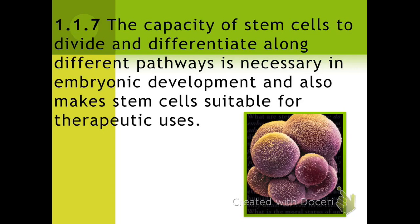Now that we've discussed differentiation and what it is, we're going to see why it's important and what some of the uses are. Looking at understanding 1.1.7: the capacity of stem cells to divide and differentiate along different pathways is necessary in embryonic development and also makes stem cells suitable for therapeutic uses. When an egg is fertilized, the two nuclei from mom and dad fuse to create one single cell with an entire genome. That cell begins to divide, and early on in development those cells do not differentiate — they retain the capacity to specialize until the embryo has grown older. Embryonic cells are very flexible and can be used for therapeutic uses, which we are currently researching, though there are some ethical issues involved which we'll discuss later.